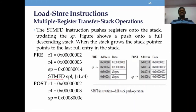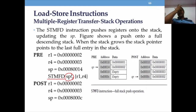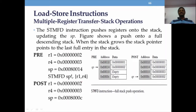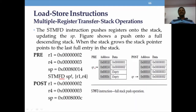Now look at the working of STMFD. We are using the explicit stack pointer SP with the writeback symbol, which updates to the last retrieved value of the pointer. Instead of SP you can also use R13. The initial content of the stack pointer is shown, and we are pushing data from registers R1 and R4 to the memory pointed by the stack pointer. FD means full descending.